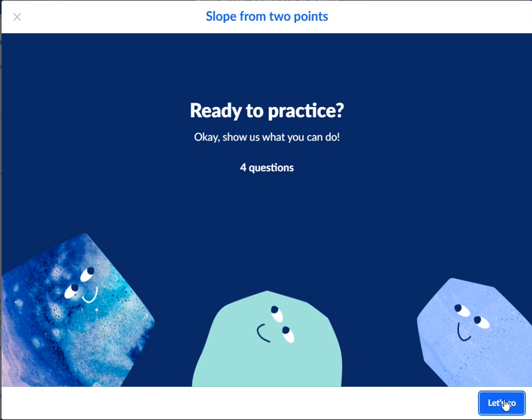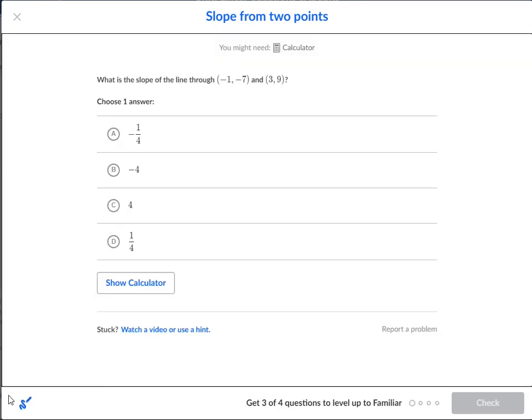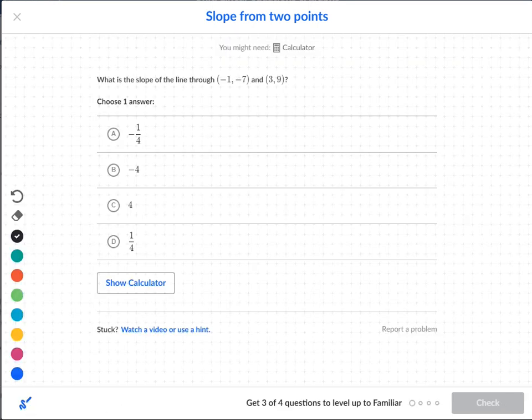Slope from two points. Okay, so we have two individual points here. We have negative one, negative seven, and we have three nine.